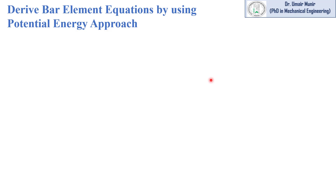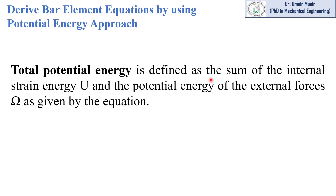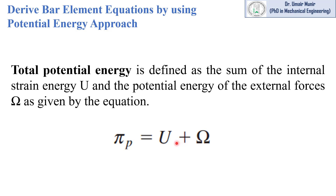In this lecture we will learn how to derive the bar element equation using the potential energy method. Total potential energy is defined as the sum of the internal strain energy U and the potential energy of the external forces omega, given by the equation phi_p = U + omega. We will evaluate internal strain energy and potential energy omega separately and then add them to find total potential energy.